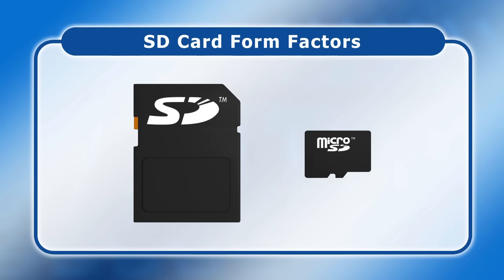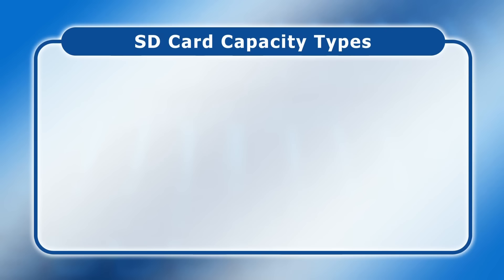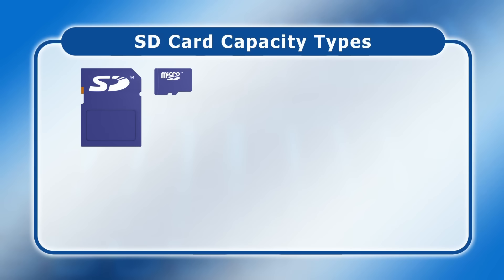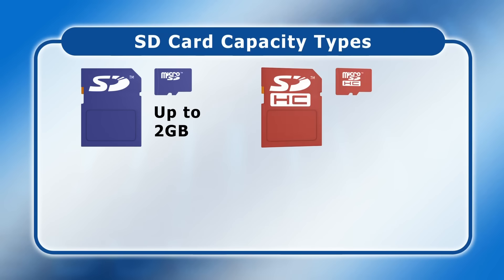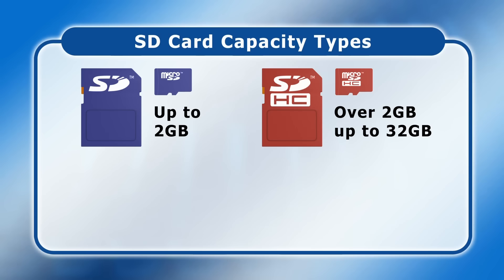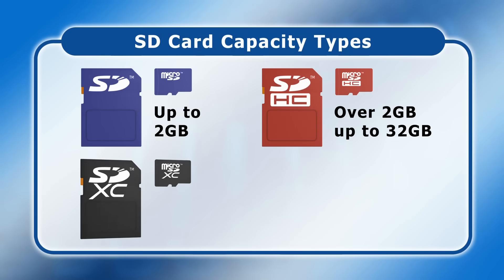All SD card form factors are available in a range of capacity types. The first is SD, which supports cards up to 2GB in size. Next comes SDHC, or Secure Digital High Capacity, for cards over 2GB and up to 32GB. After that, we have SDXC, or Secure Digital Extended Capacity, with a size over 32GB and up to 2TB.